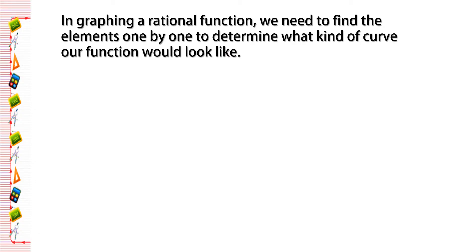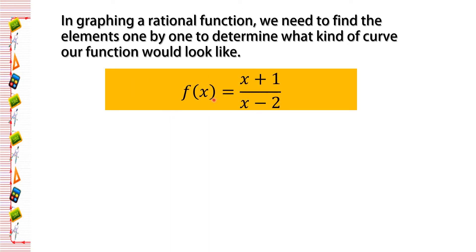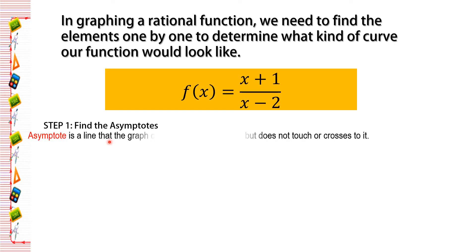In graphing a rational function, all we need to do is to find the elements one by one in order to determine what kind of curve our function would look like. I have a given function: f of x is equal to x plus 1 all over x minus 2. The first step is to find the asymptotes. An asymptote is a line that the graph of a function gets close to but does not touch or cross.